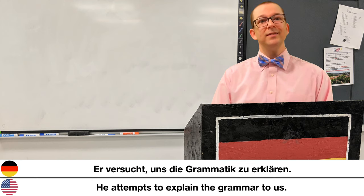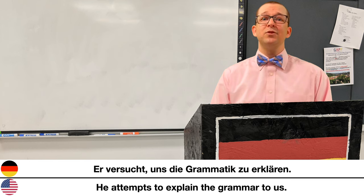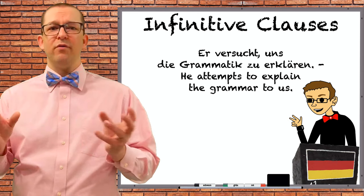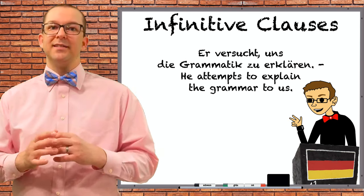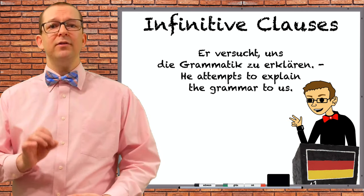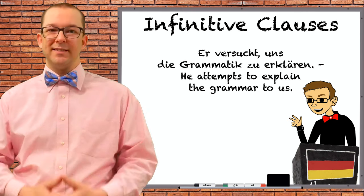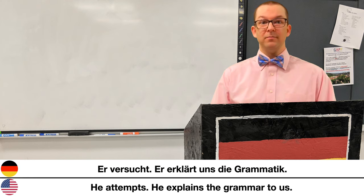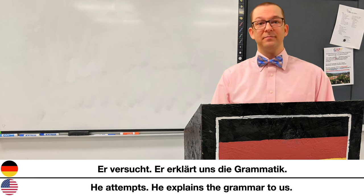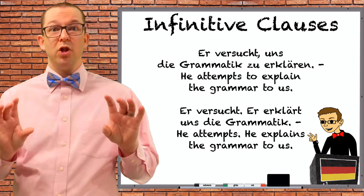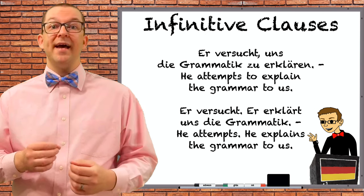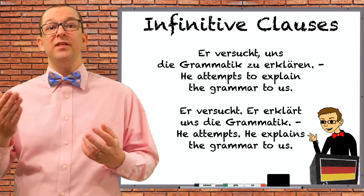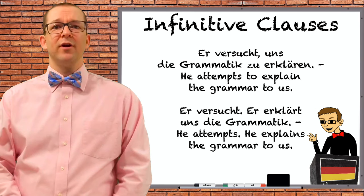Er versucht uns die Grammatik zu erklären — He attempts to explain the grammar to us. The subject of both halves is 'er', but the second clause doesn't include 'er'. Instead it implies that the subject is the same without actually naming it. You can clearly see this if you break the two clauses apart: Er versucht. Er erklärt uns die Grammatik. — He attempts. He explains to us the grammar. Now you can clearly see the subject of the two clauses is the same. When we eliminate the second subject, we make it into a dependent clause, adding 'zu' and changing 'erklärt' back into the infinitive form 'erklären'.